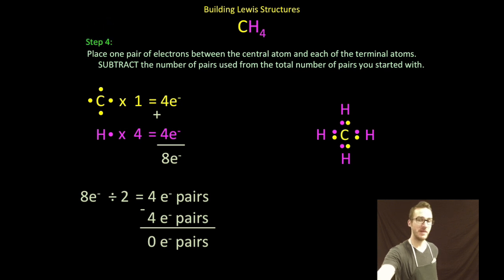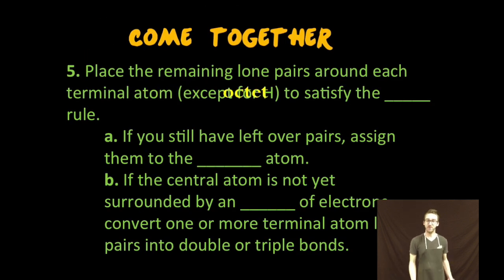Step five is basically where we check our work. If you have any remaining lone pairs, you're going to first put them on the terminal atoms to satisfy the octet rule.